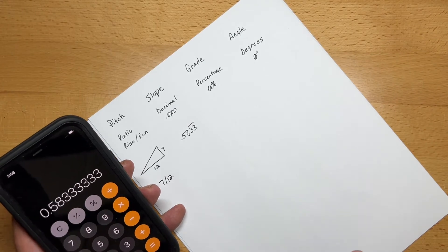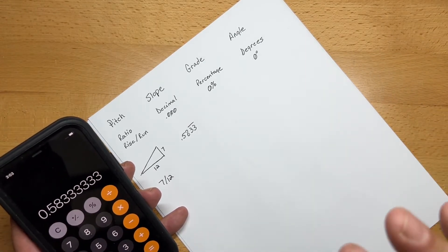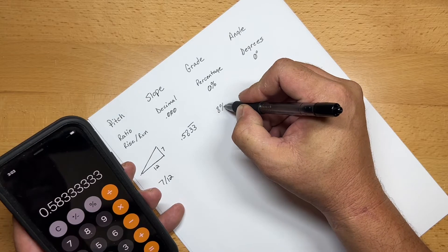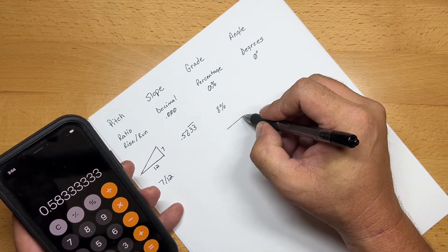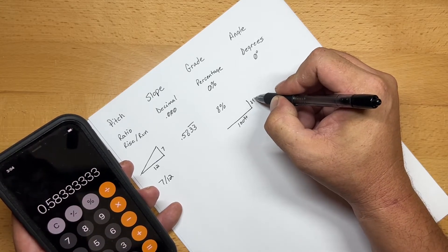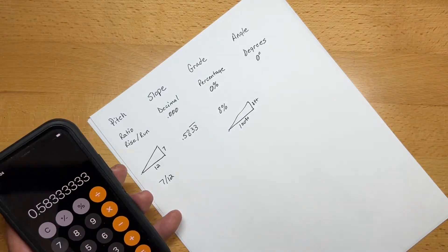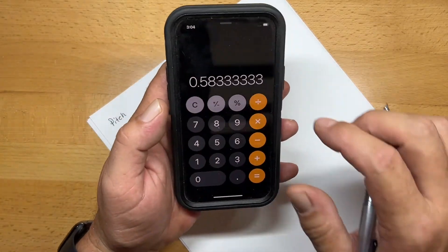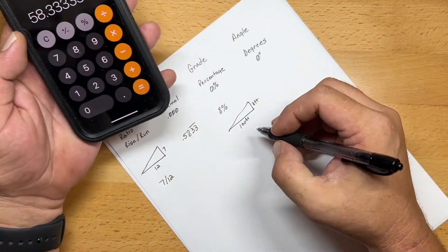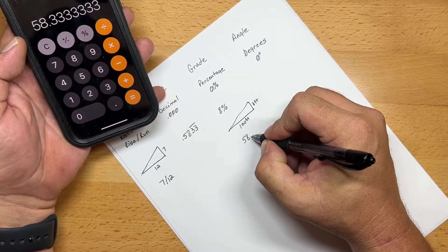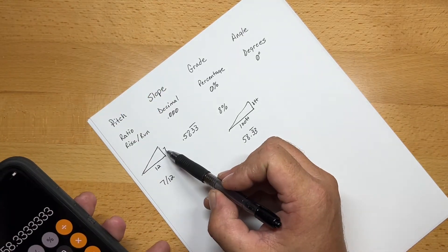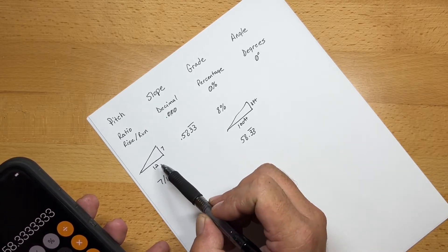Now, grade is a percentage. You'll find this in roadways, and usually that's done a certain amount of grade for every 100 feet. So if you go down the road and you see a sign that says 8% grade, that means that the rise over the run, the run is 100 feet, and the rise is 8 feet over that 100 feet. So to get the percentage of this, you would take the 0.583 repeating and you just multiply it by 100, and that will give you 58.33 repeating percent.